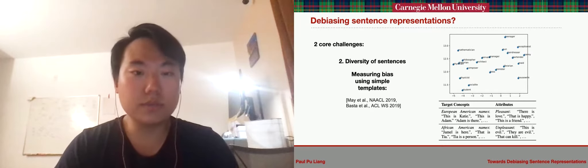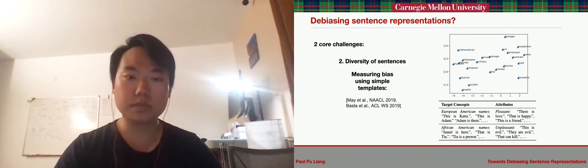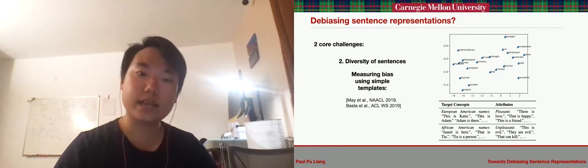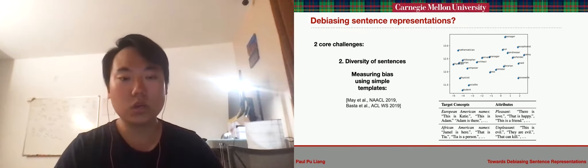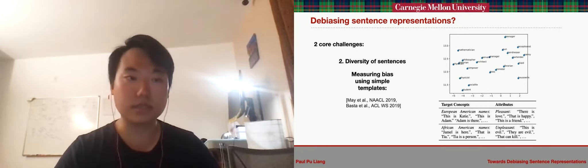While some work has studied the use of simple templates to measure bias, for example, converting the word-level concepts in the WEAT tests such as Katie and Adam to template-based sentences such as 'this is Katie' and 'this is Adam', we show that these are suboptimal for estimating and reducing bias in sentence representations.